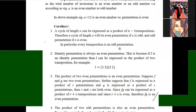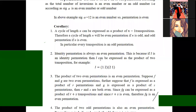In particular, every transposition is an odd permutation, because one transposition means one, and one is an odd number. The identity permutation is always an even permutation, because it has zero transpositions. Alternatively, the identity permutation can be expressed as the product of two transpositions — itself and its inverse — so it is an even permutation.